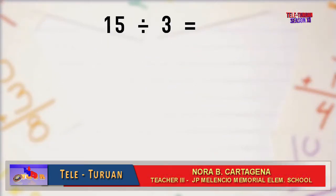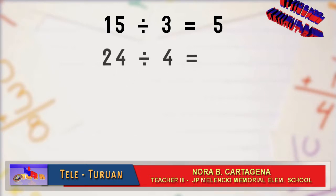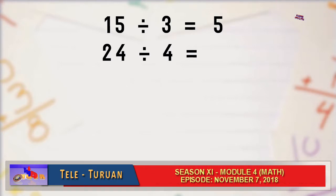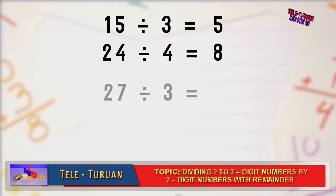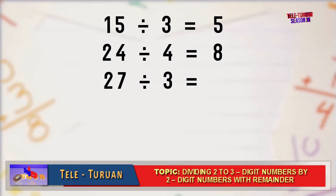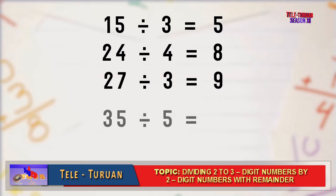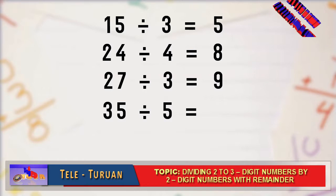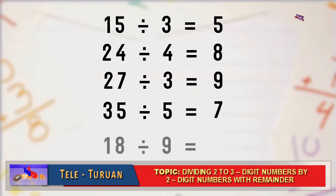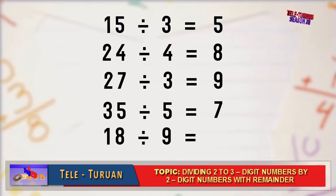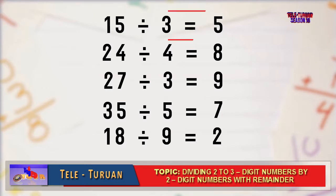15 divided by 3 equals 5. 24 divided by 4 equals 8. 27 divided by 3 equals 9. 35 divided by 5 equals 7. 18 divided by 9 equals 2.